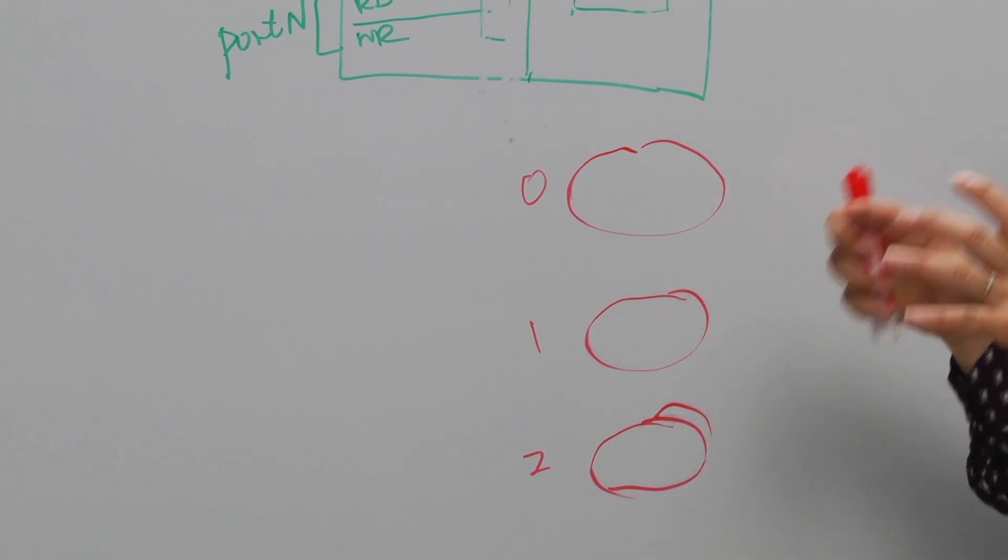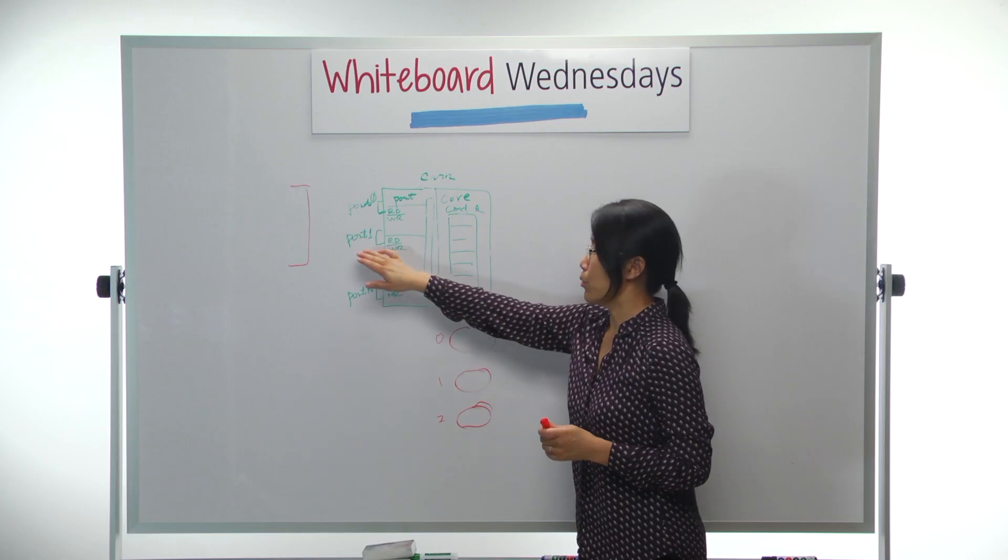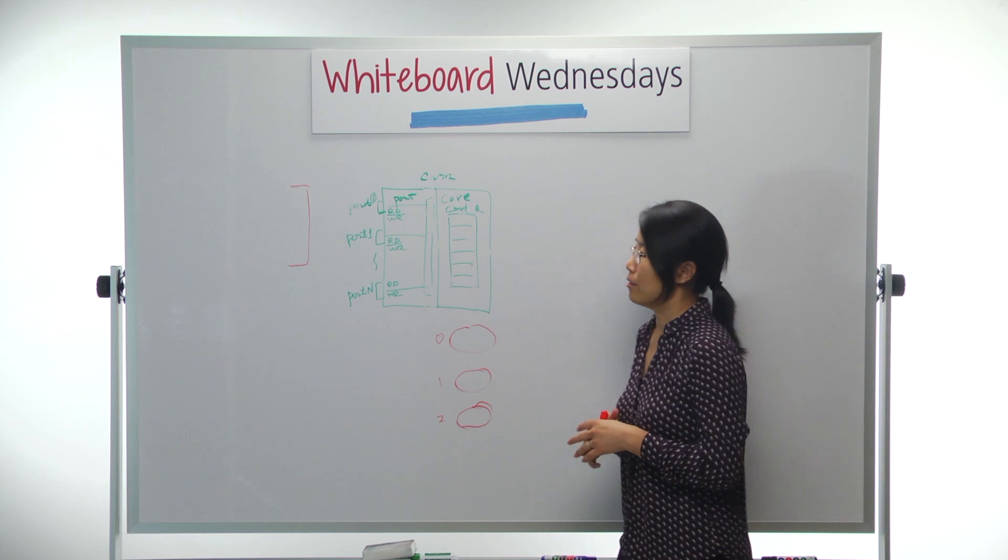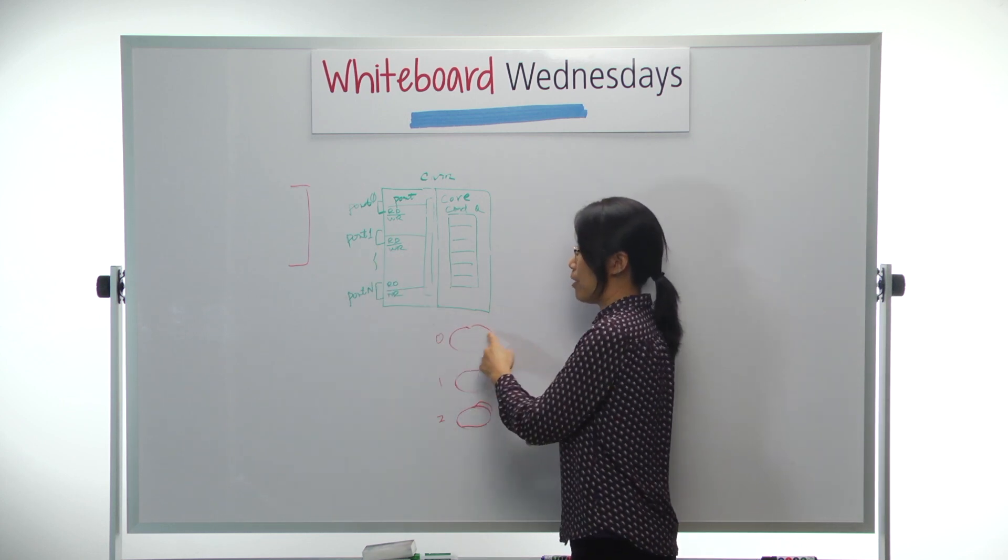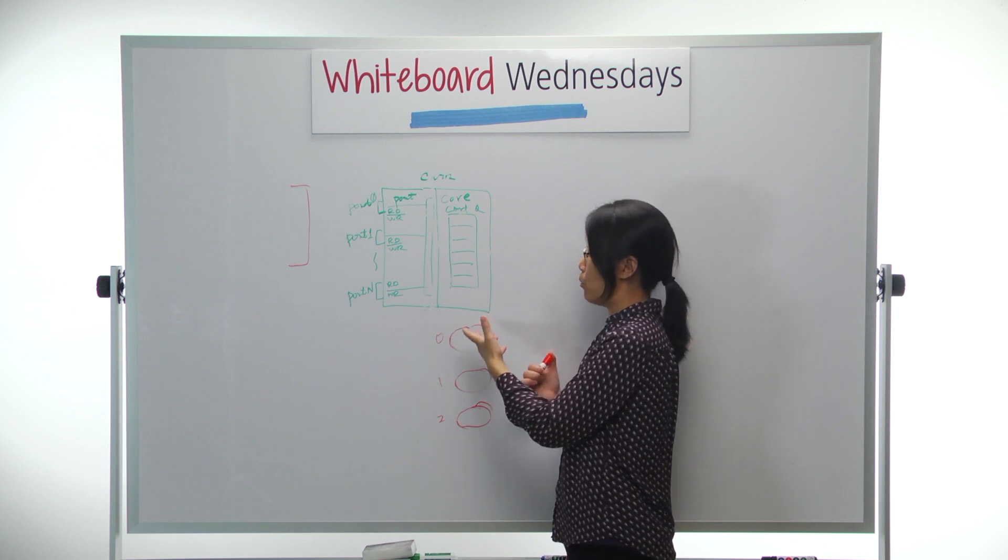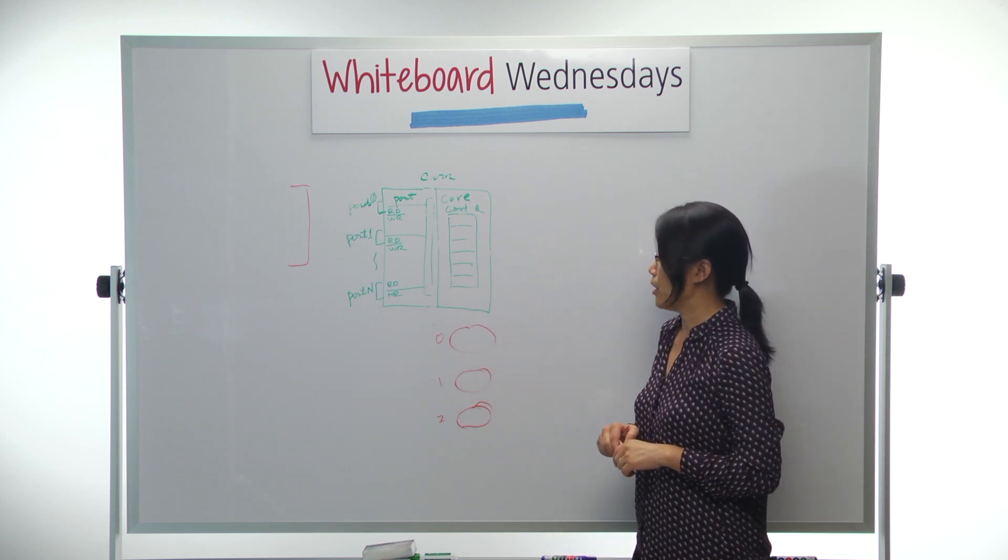We can give that port some weightings. So if we give port 1 higher weight than port 0, the port 1 command with the same priority will have more opportunity to be put into the command queue. So this is the weighted round robin, the most complex one.